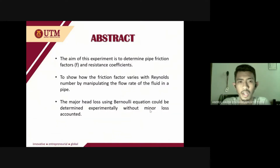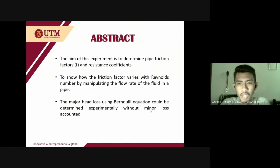First, the abstract. The purpose of the experiment is to determine the friction factors and resistance coefficient. This is to show how the friction factor varies with Reynolds number by manipulating the flow rate of the fluid in a pipe. The major head loss using the Bernoulli equation could be determined experimentally without minor loss accounted.